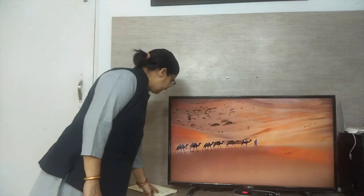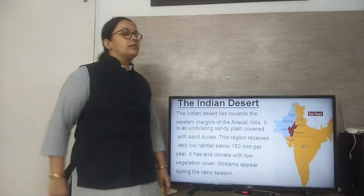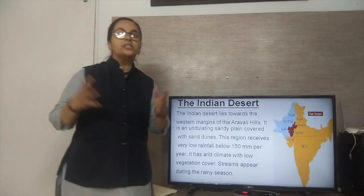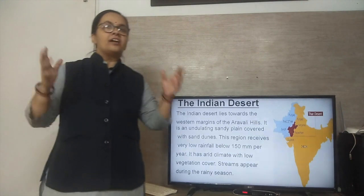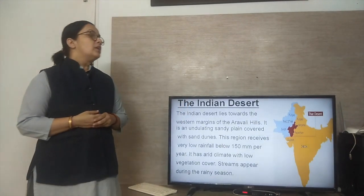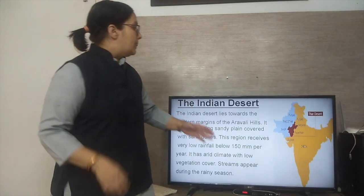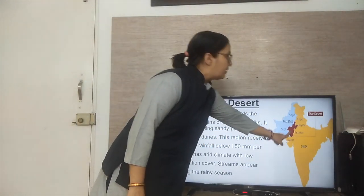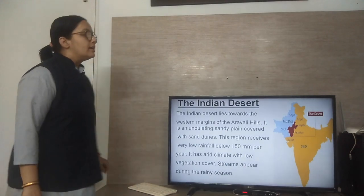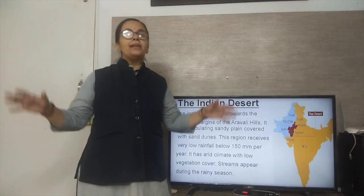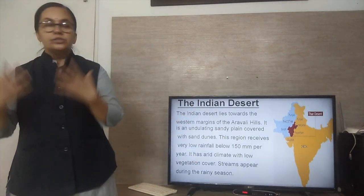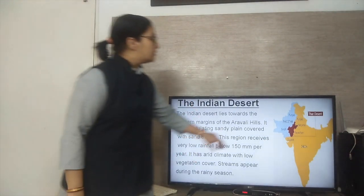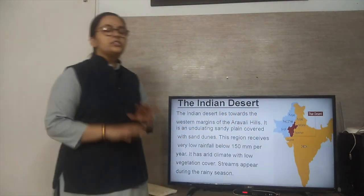Today we will take up the topic of the Indian Desert. Our Indian Desert is located in Rajasthan and is called the Thar Desert, or the Great Indian Desert. The Indian Desert lies towards the western margin of the Aravalli Hills and is an undulating sandy plain covered with sand dunes. The whole Thar Desert has a sandy plain — wherever you go, you will see sand and sand dunes.